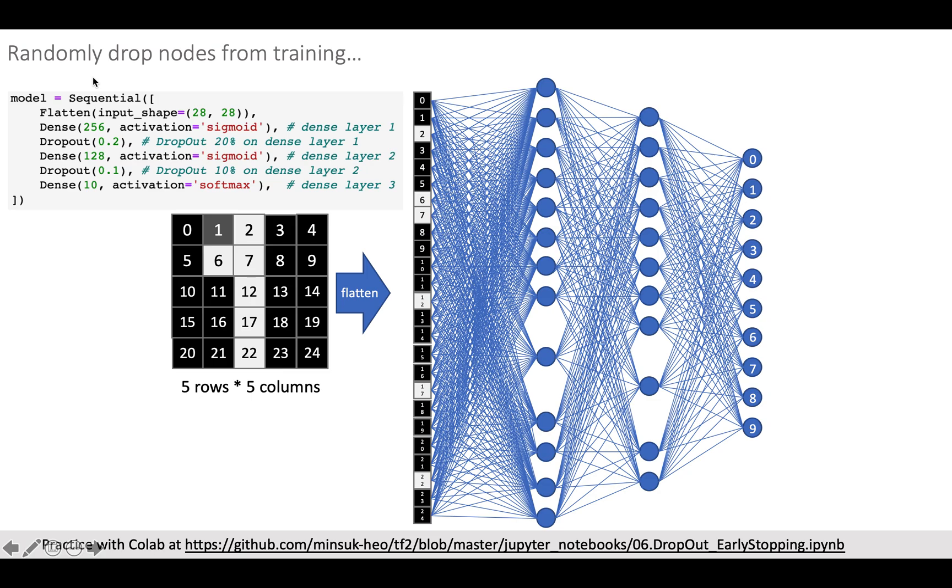Here you can find TensorFlow 2 code of dropout at the top left corner. The dropout function will be applied to the just previous layer. So in this code, the first dropout will be applied to the first hidden layer. The second dropout will be applied to the second hidden layer.